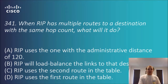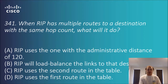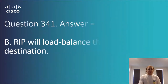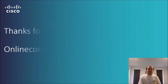Question 3.41: when RIP has multiple routes to a destination with the same hop count, what will it do? Options are: use the one with administrative distance of 120, use load balancing across the links, use the second route in the table, or use the first route in the table. In this situation, RIP will load balance the links to that destination. The answer is B.